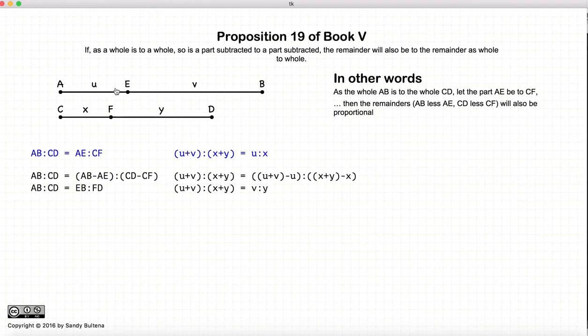So in other words, all three ratios will be the same. So if AB to CD is equal to AE to CF, it is also equal to EB to FD.